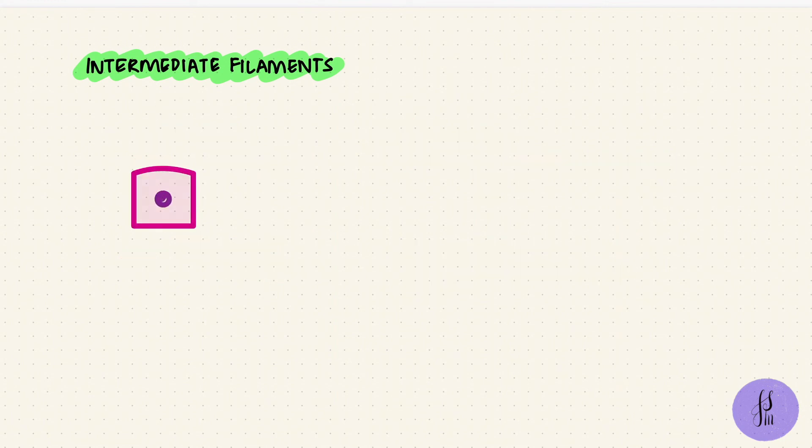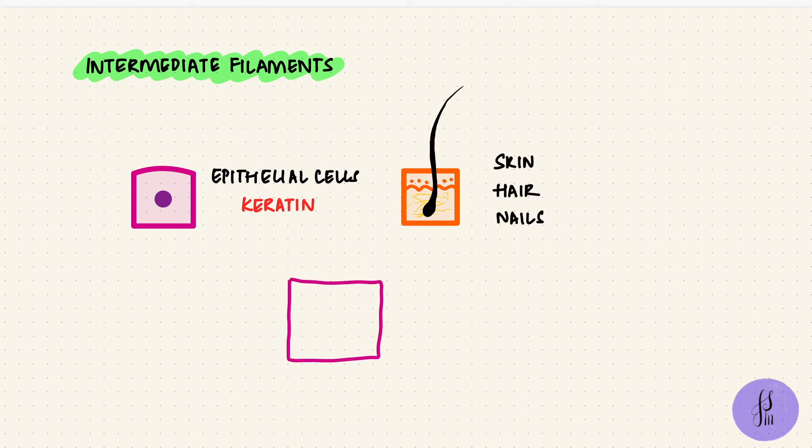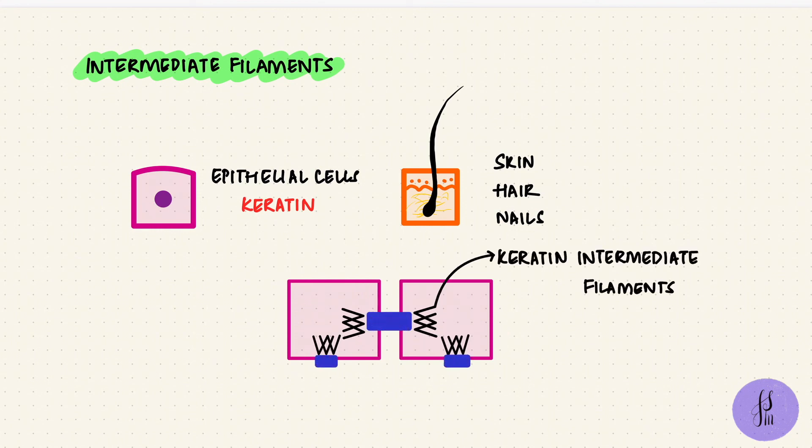Epithelial cells have keratin. That's probably the easiest one to remember. Keratin filaments give strength to the skin, hair, and nails. Together with desmosomes and hemidesmosomes, keratin intermediate filaments help with cell-to-cell adhesion and cell-to-matrix adhesion. I'll probably be able to explain this better when I talk about the structure of the skin.